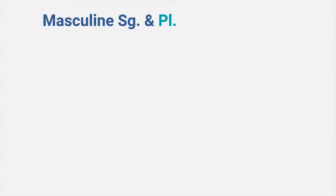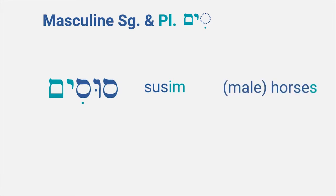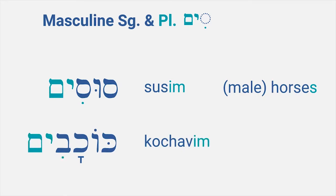The masculine singular form is the easiest, and these usually are the standard dictionary form. The plural form of the masculine word is pretty simple too. There is one standard way of making a masculine word plural, and that is by adding -im at the end: a hirek under the last consonant, followed by a yod and a mem. For example, sus is masculine singular, male horse, and susim is masculine plural, male horses. Another example: kochav, star, and kochavim, stars.